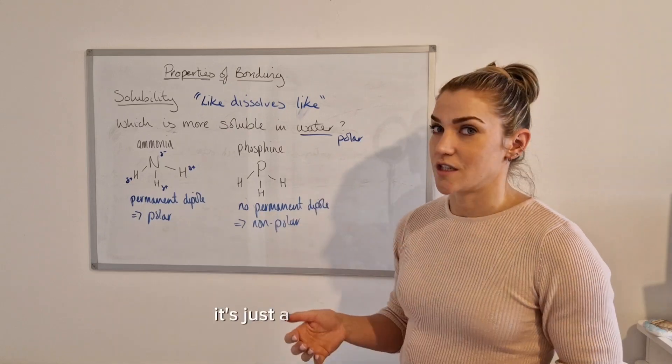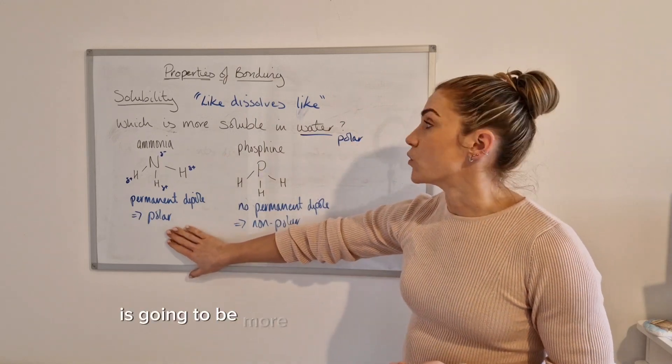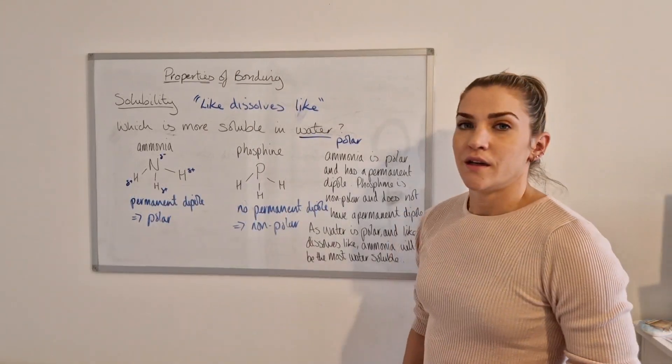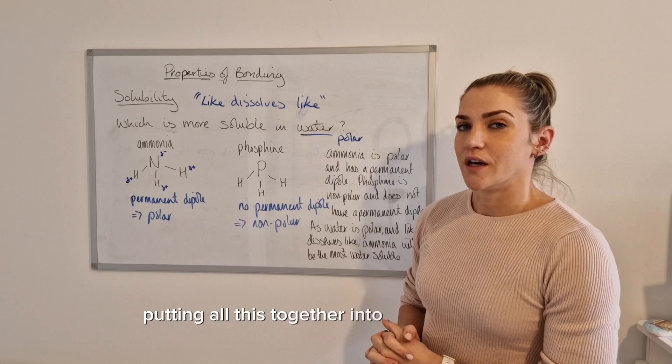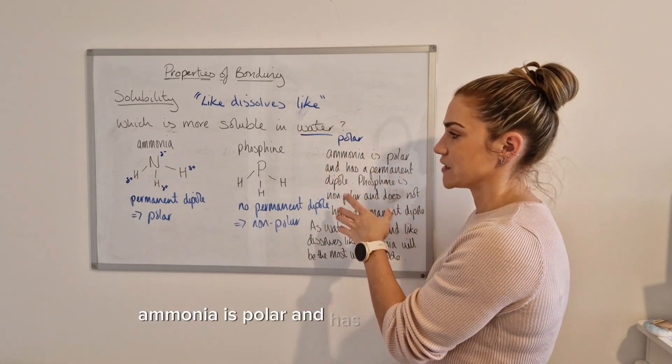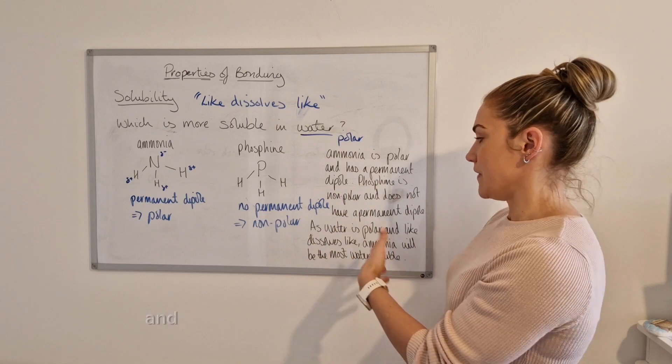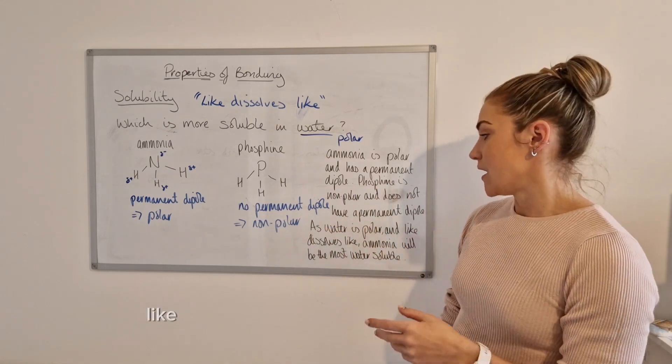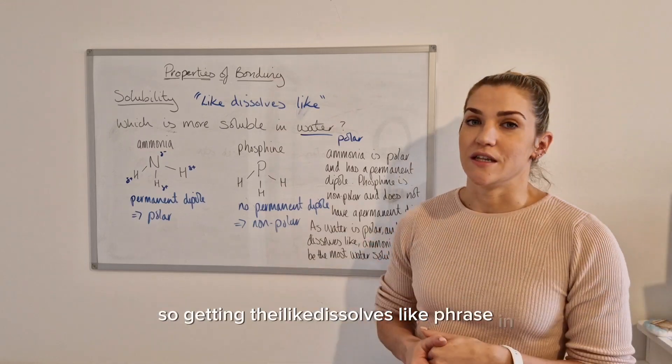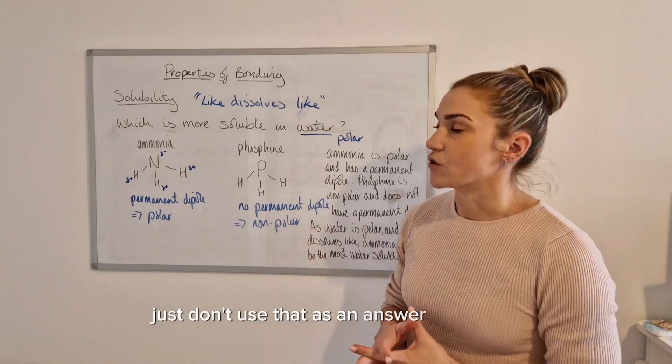Now that we've done that, it's just a simple comparison. So we know like dissolves like, so because water is polar, it means that ammonia is going to be more soluble because it's also polar than phosphine, which is non-polar. So in terms of putting all this together into an exam answer, you would want to say something along the lines of that ammonia is polar and has a permanent dipole. Phosphine is non-polar and does not have a permanent dipole. And then as water is polar and like dissolves like, ammonia will be the most water soluble.